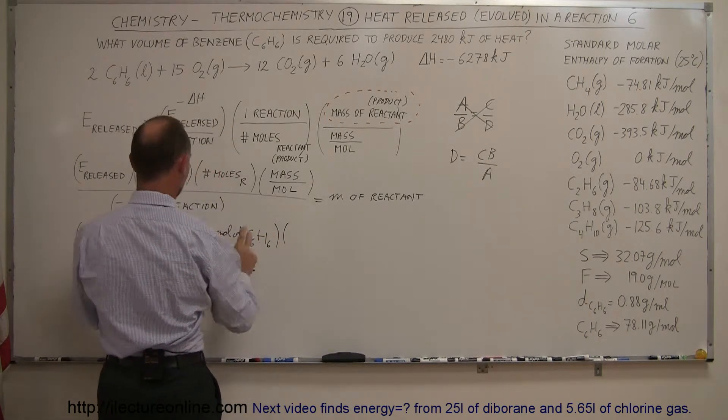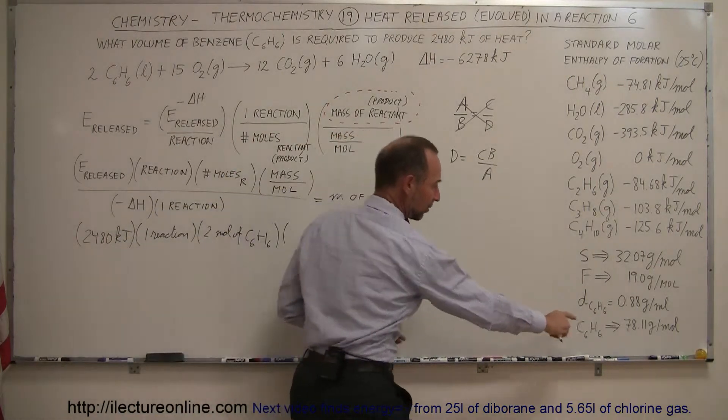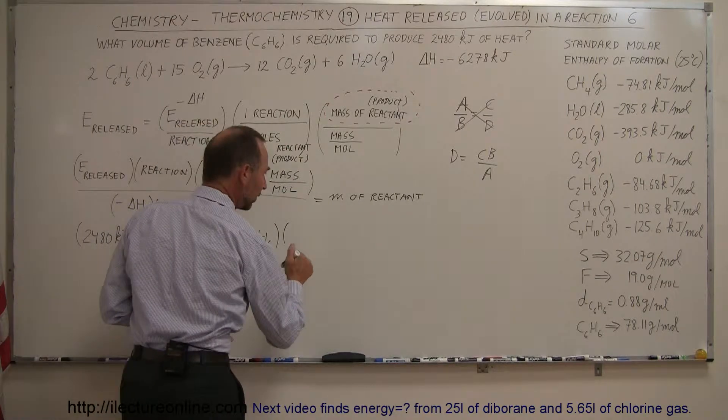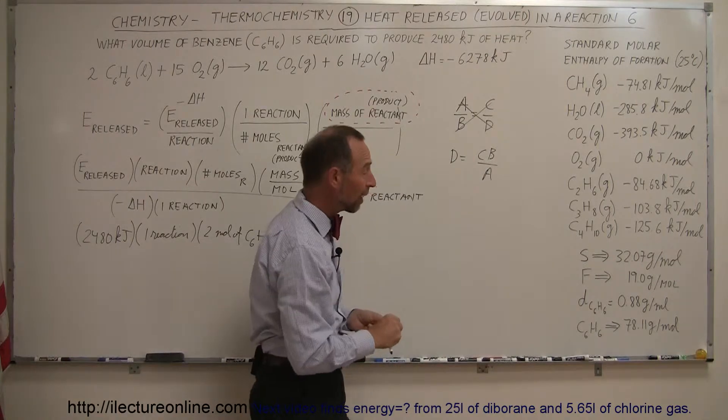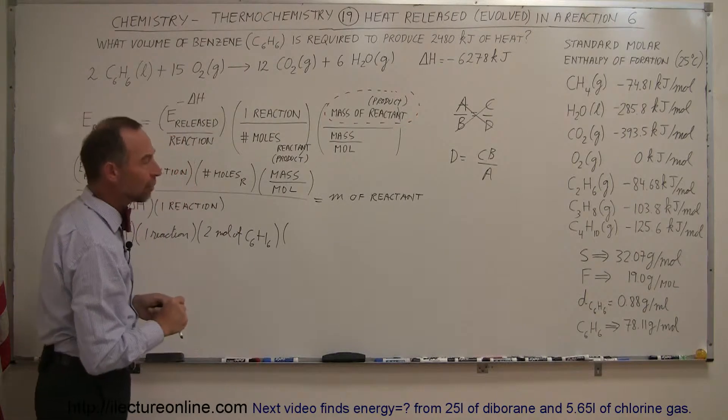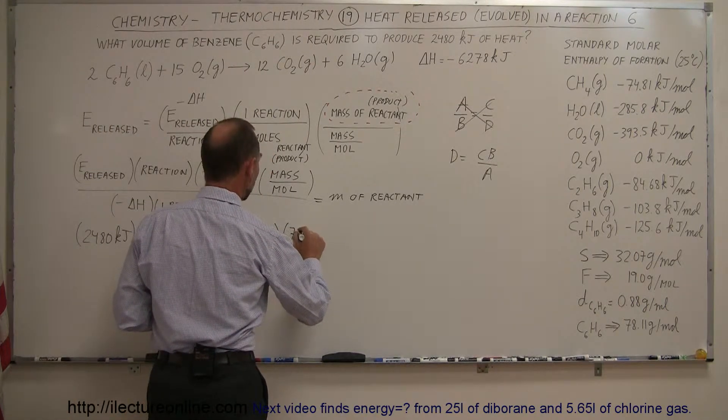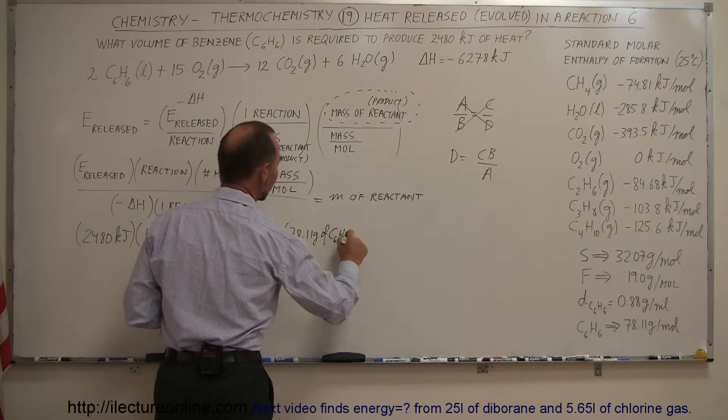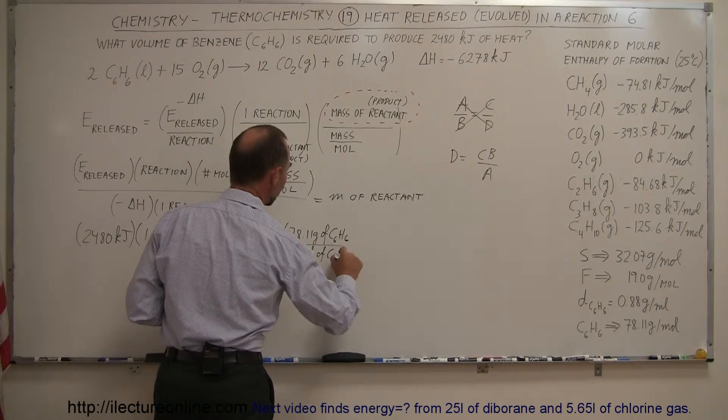Times the mass per mole. So the mass per mole, I think I wrote that down right here as a reference, so we have 78.11 grams per mole, so we don't have to calculate it. Remember, if you want to calculate it, carbon has a mass of 12.01 grams per mole, and H, hydrogen has a mass of 1.008 grams per mole, so together become 78.11, so 78.11 grams of C6H6 divided by one mole of C6H6.